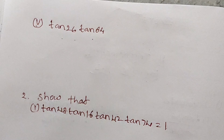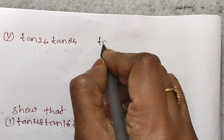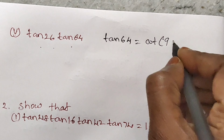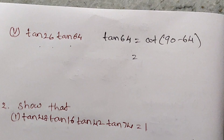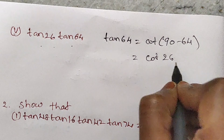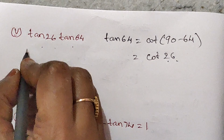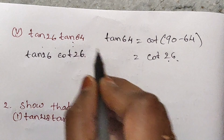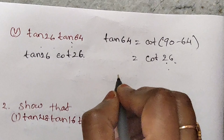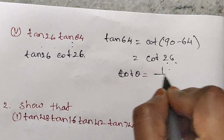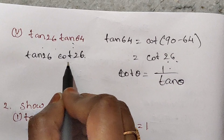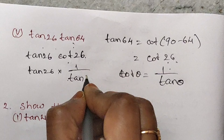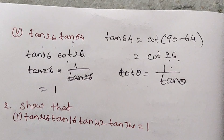Next question: tan 26 into tan 64. I will change tan 64. Tan 64 can be written as cot(90 minus 64). 90 minus 64 is 26, so tan 64 is equal to cot 26. You know that cot theta is equal to 1 by tan theta. So tan 26 into cot 26 becomes tan 26 into 1 by tan 26. Tan 26 gets cancelled. The answer is 1.